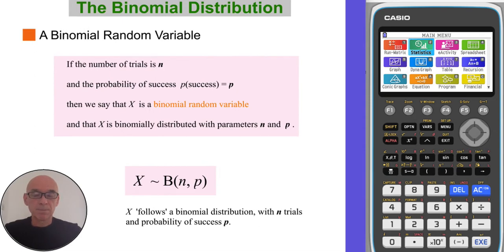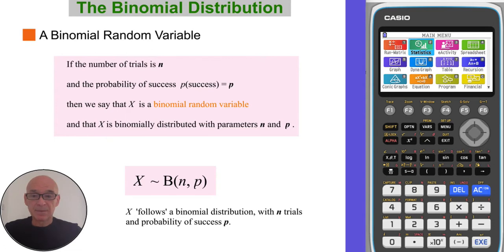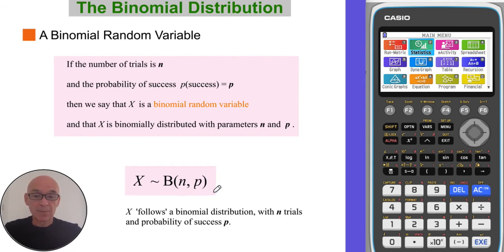In a binomial experiment, if the number of trials is notated with n and the probability of success is notated with p, we say that X is binomially distributed with parameters n and p. We say that X follows a binomial distribution with n trials and a probability of success of p.